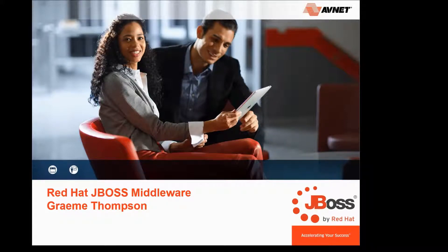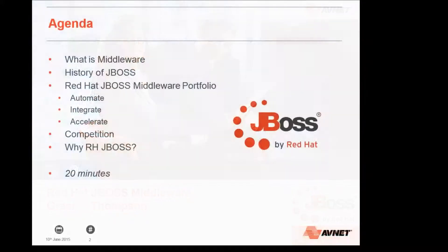So a quick agenda: I'm going to go through what middleware is, a bit about the history of JBoss itself as a product line prior to Red Hat's involvement. I'm going to have a look at Red Hat's JBoss middleware portfolio and what they've done with it, how they break it down into three areas, a touch on the competition, and then finish off with why you should look at Red Hat and Red Hat's JBoss solution — pretty similar arguments to choosing Red Hat against community driven open source projects.